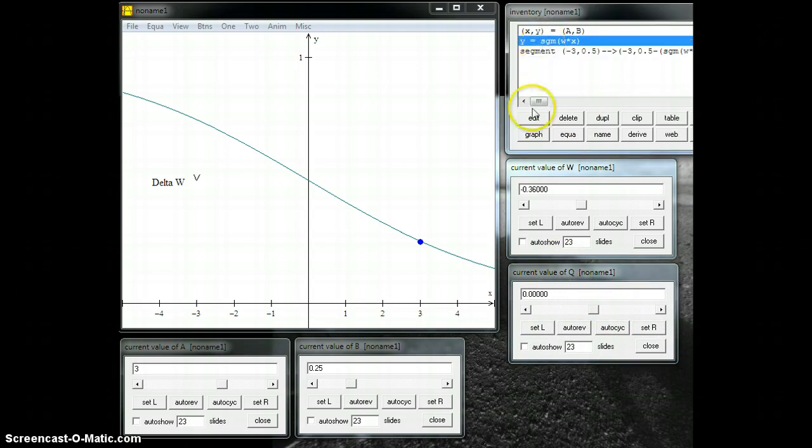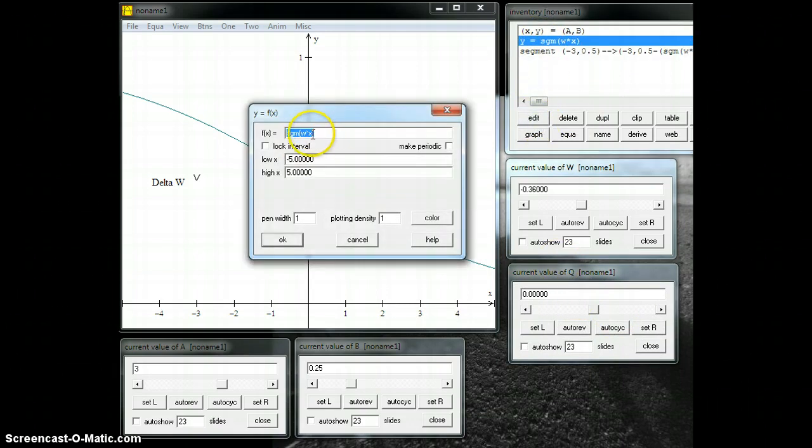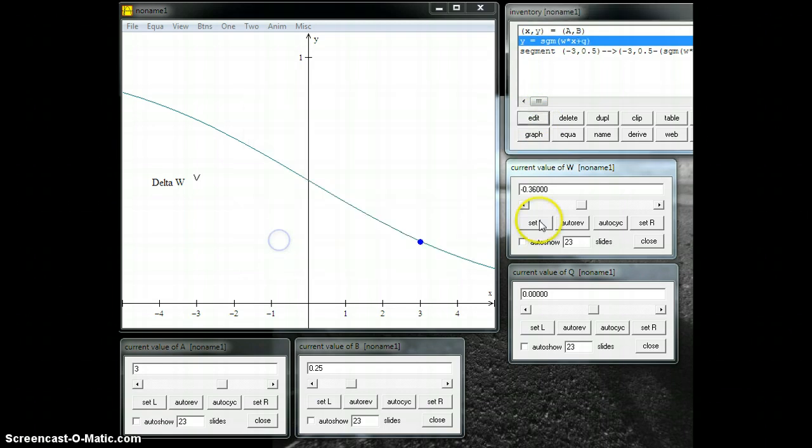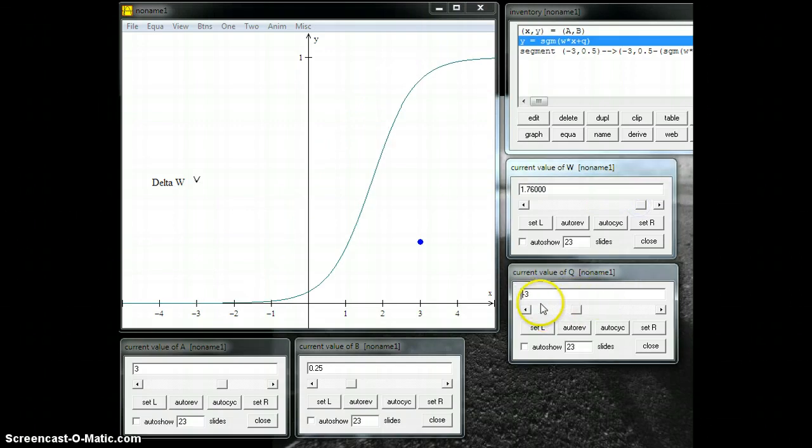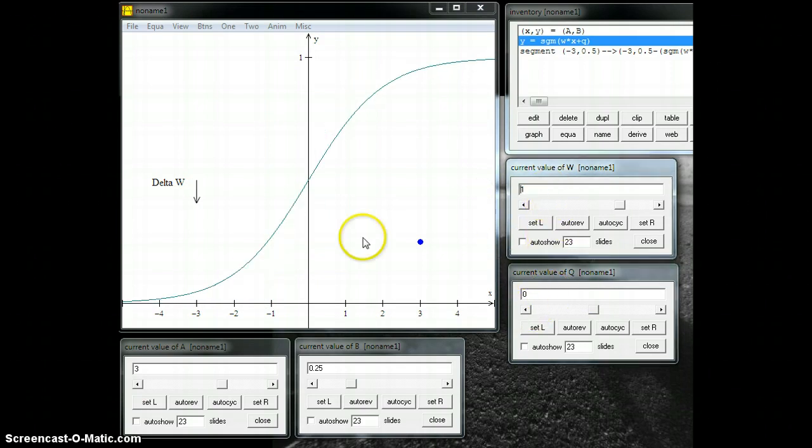First thing I'm going to do is go back to my sigmoid function and make this wx plus q. Now I have a bias term, so you can see as I change this bias it moves left and right, which is exactly what you would expect. Maybe it'll be easier to see if I make this really steep, if this is at negative 3 or something. You can see here the bias shifts it left and right. So I'm going to set that to zero.